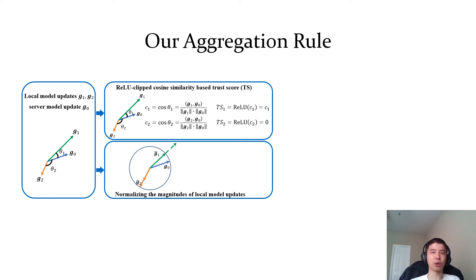We also normalize the magnitudes of the local model updates to further limit the impact of the local model updates from malicious clients. In particular, we normalize the local model updates such that they have the same magnitude as the server model update. g1-bar is the normalized local model update for client 1, while g2-bar is the one for client 2.